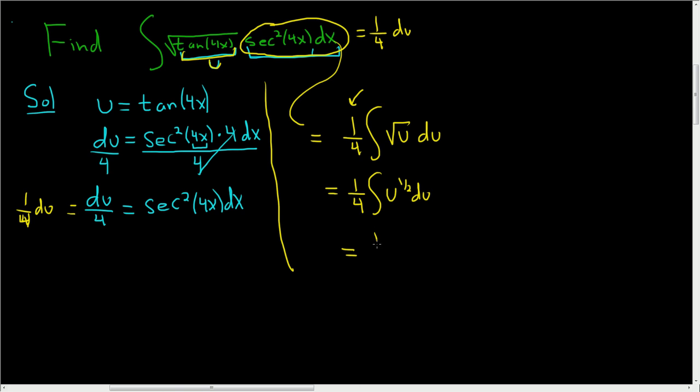Then this becomes 1 4th, u to the 3 halves. And we're dividing by 3 halves, so that's the same thing as multiplying by 2 3rds, right? When you divide by 3 halves, you multiply by the reciprocal of 3 halves, which is 2 3rds, plus c.